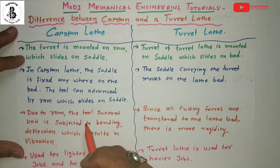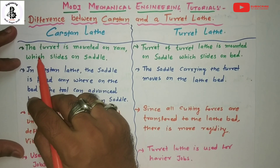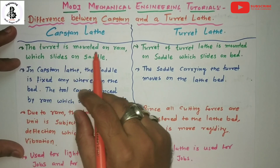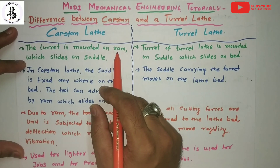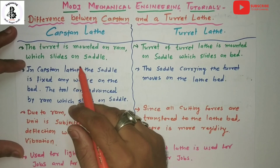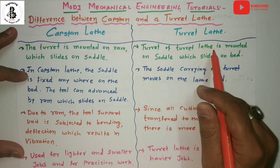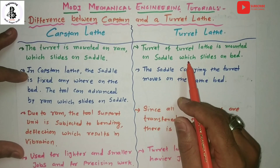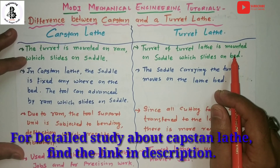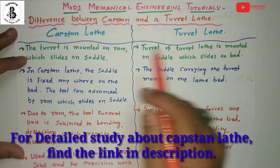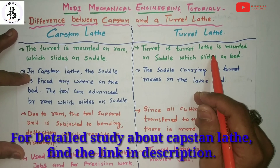In the case of the capstan lathe, the turret is mounted onto the ram, as we have already discussed in previous lectures. The ram slides onto the saddle. In the case of the turret lathe, the turret is mounted directly onto the saddle, which slides onto the bed. So that is the basic difference — here there is a ram; in the turret lathe no ram is used.